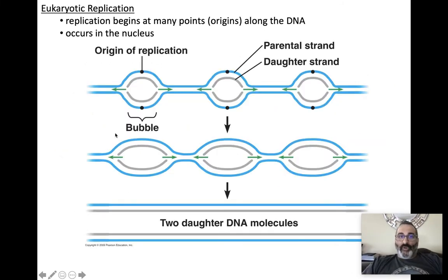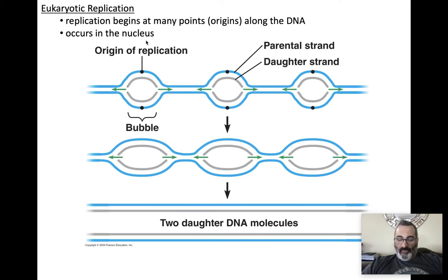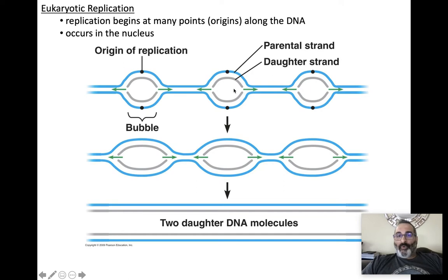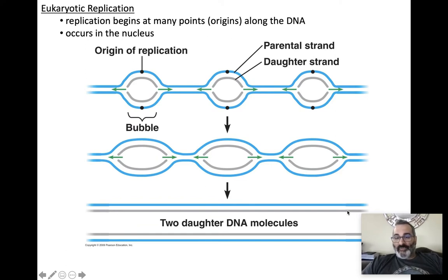You and me — we are eukaryotes. We have a nucleus, so replication happens there. Because we have 46 chromosomes — much more DNA than bacteria — if there were only one origin point, it would take far too long to replicate. So in eukaryotes, there are many points of origin, and many replication forks start peeling off in many directions simultaneously. Eventually they all meet, and you end up with two new complete DNA molecules.